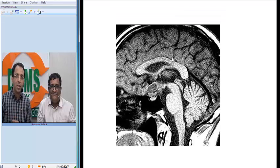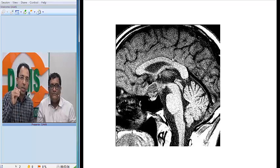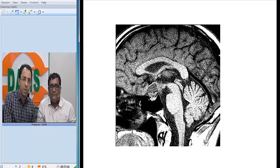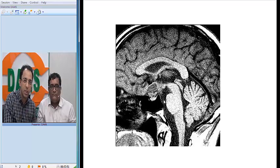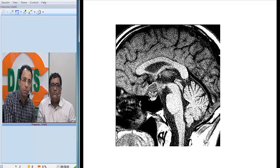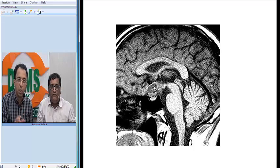On the MRI image, this is a sagittal T1-weighted image. The anatomy includes the corpus callosum, fornix, midbrain, aqueduct, colliculi, pons, medulla, and cerebellar vermis — we are in the exact midline sagittal section. The sphenoid sinus and pituitary gland are visible, and you can see the tumour here. On MRI, the tumour has some solid components and some cystic components which appear hypointense on the T1-weighted image.